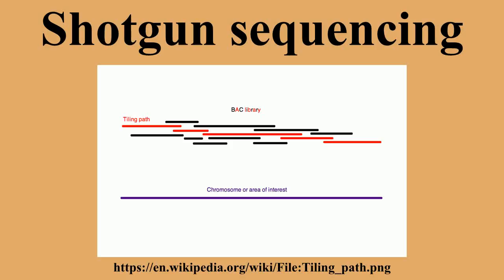Although shotgun sequencing can in theory be applied to a genome of any size, its direct application to the sequencing of large genomes was limited until the late 1990s, when technological advances made practical the handling of the vast quantities of complex data involved in the process. Full-genome shotgun sequencing was believed to be limited by both the sheer size of large genomes and by the complexity added by the high percentage of repetitive DNA present in large genomes.